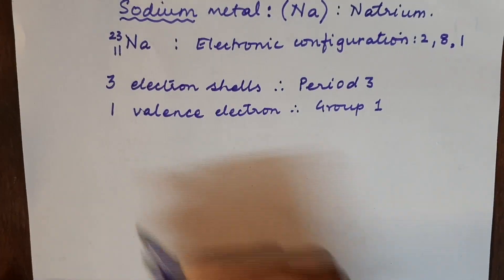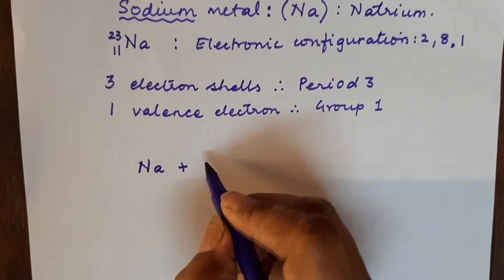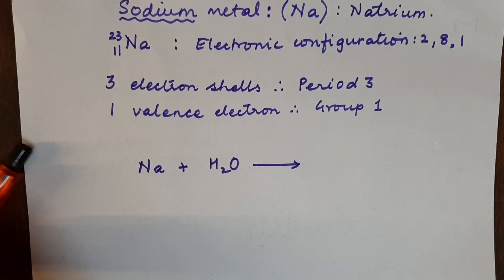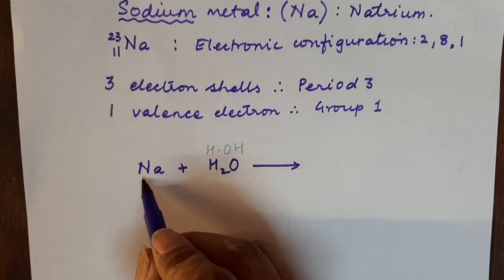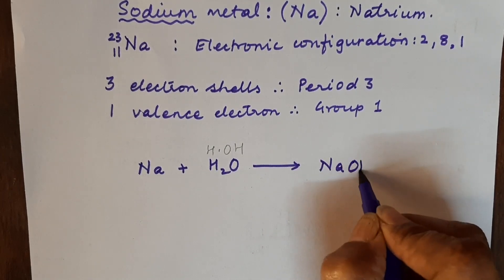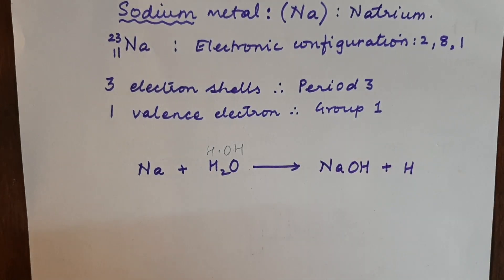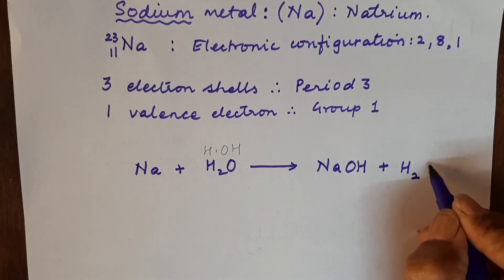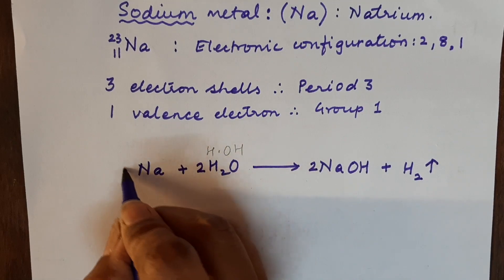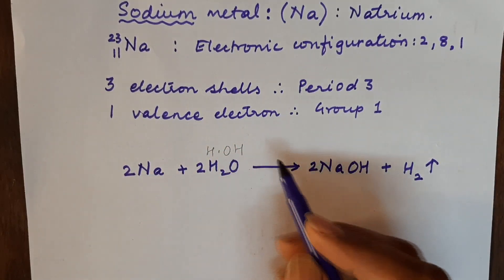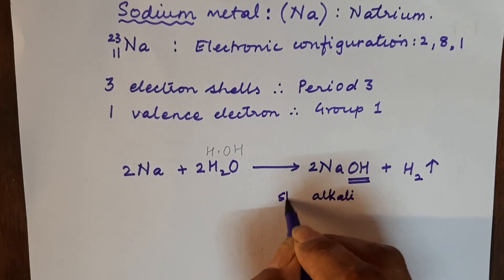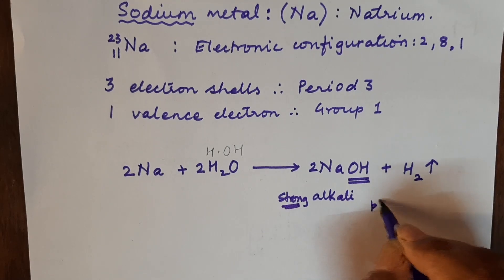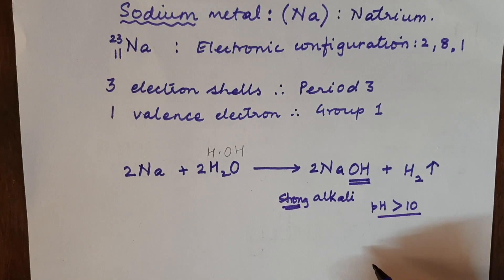Let us look at our reaction. Sodium reacted with H₂O. Na takes OH and becomes NaOH, and H is liberated. Since we cannot have a single atom of hydrogen, we write H₂ gas, and everything is doubled: 2Na + 2H₂O → 2NaOH + H₂ gas. Because of this hydroxyl group, NaOH is an alkali — a strong alkali, since its pH as we saw was greater than 10.